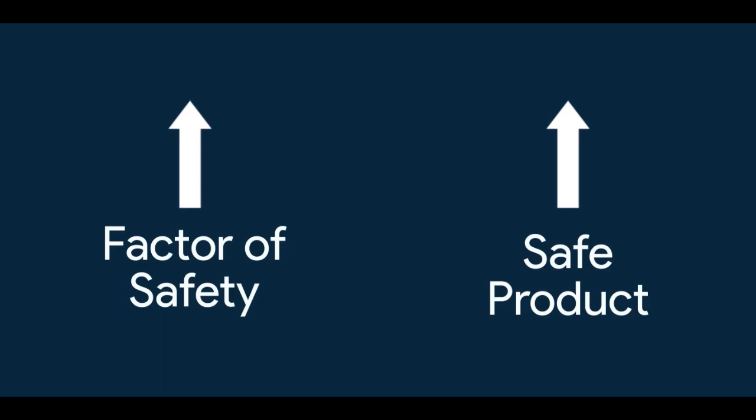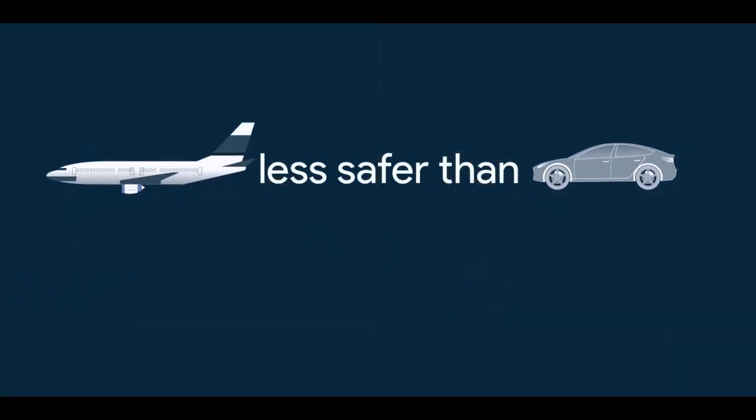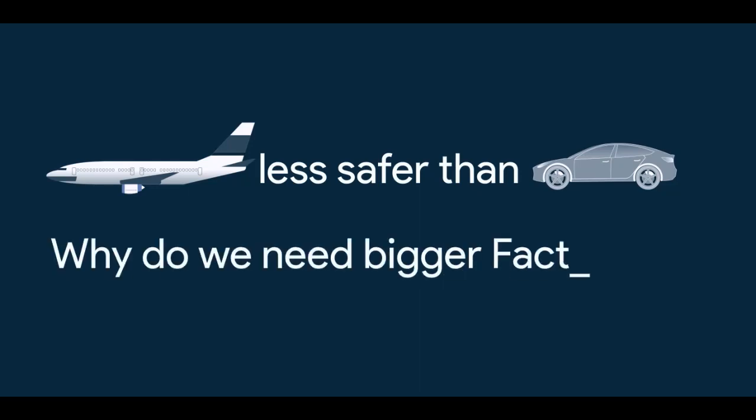But wait a minute, is it that simple? Planes and most of its components are designed with factor of safety of 1.25, and cars are designed with factor of safety in range of 3 to 5. So does that mean planes are less safe than cars? And if not, then why do we need bigger factors?